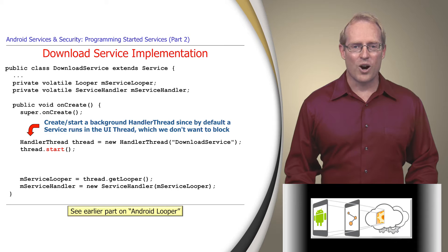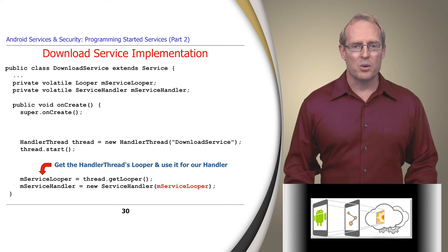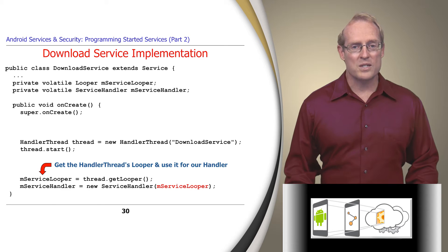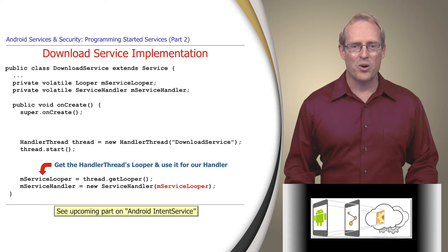The onCreate hook method next gets the handler thread's looper and passes it to the constructor of ServiceHandler, so its handleMessage method will be dispatched in the context of the handler thread. This is a common idiom applied in various Android packaged applications, as we'll show in an upcoming video.